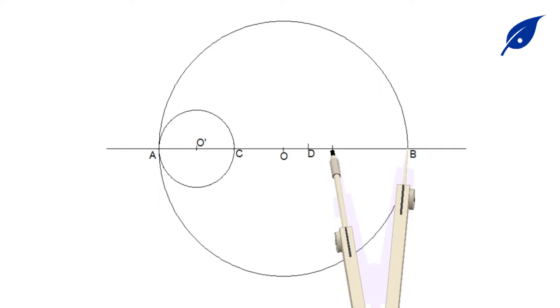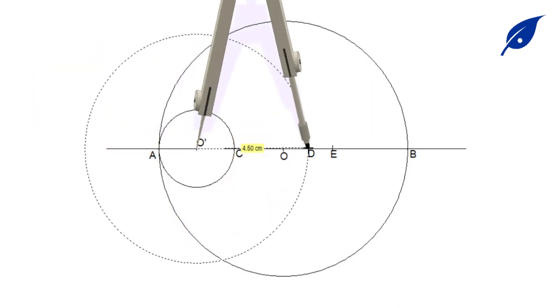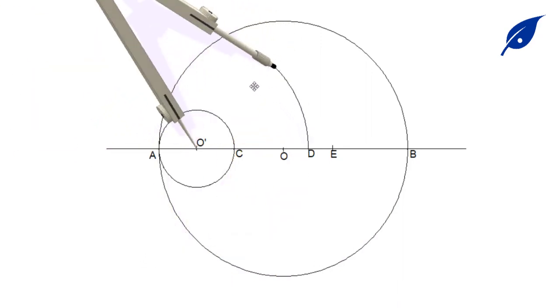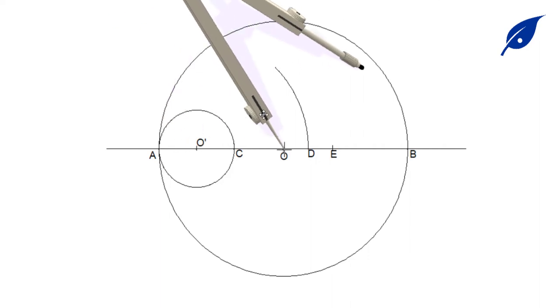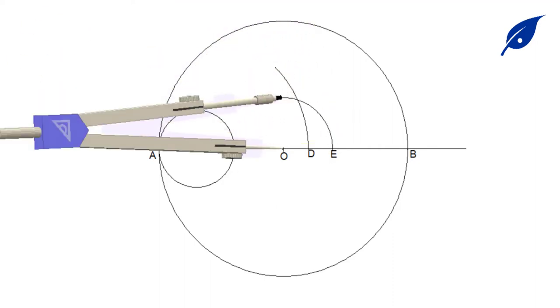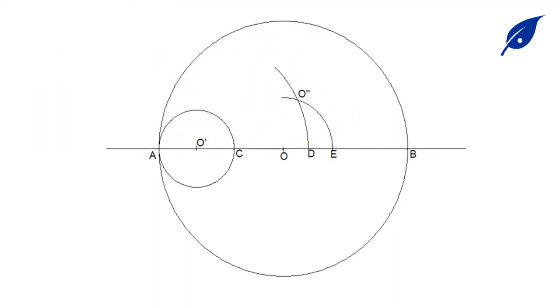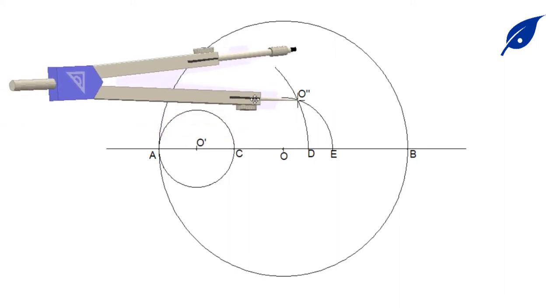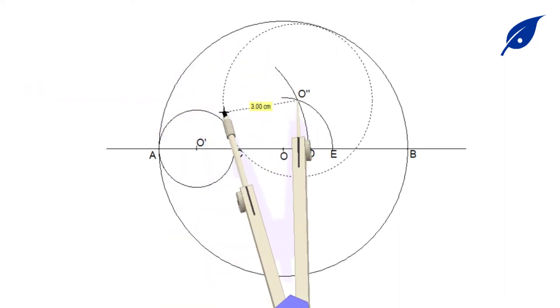After getting point E, we'll move to the next thing, which is to use the compass with the center at O and a radius OD to describe an arc. Then also with the radius OE, we'll describe another arc to meet at O double prime.